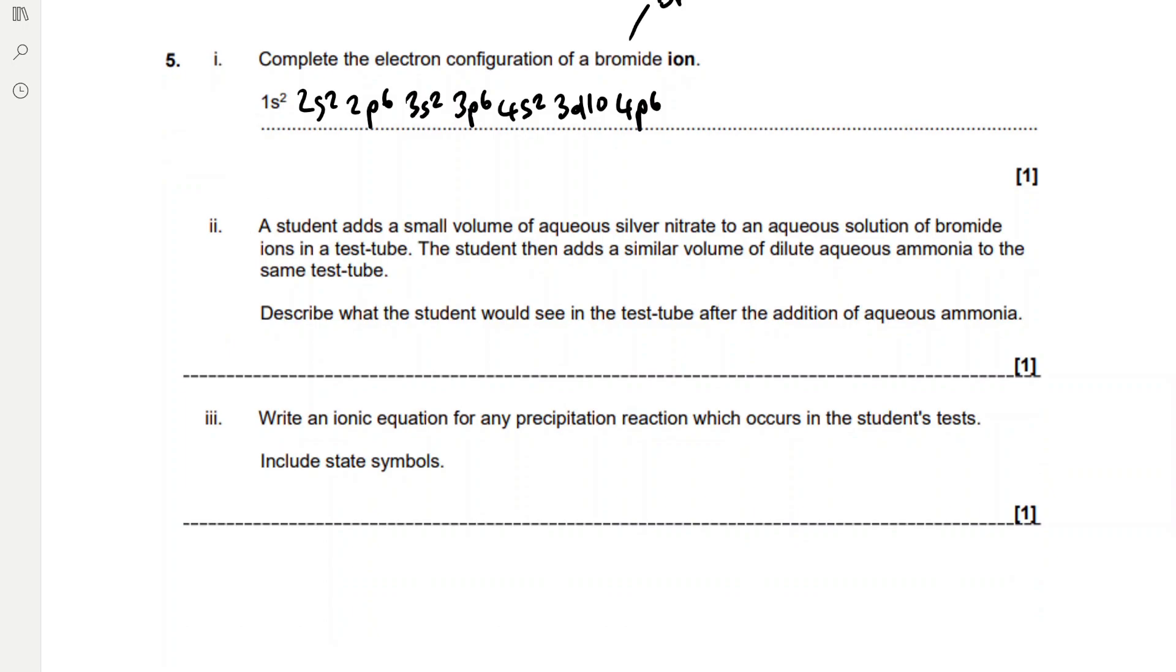A student adds a small volume of aqueous silver nitrate to an aqueous solution of bromide ions in a test tube. The student then adds a similar volume of dilute aqueous ammonia to the same test tube. Describe what the student would see. When we add Ag plus ions in the form of silver nitrate to the bromide ions, it's going to form a cream precipitate. This cream precipitate is not going to be soluble in dilute ammonia. So we're going to be left with a cream precipitate. It's only soluble in concentrated ammonia.